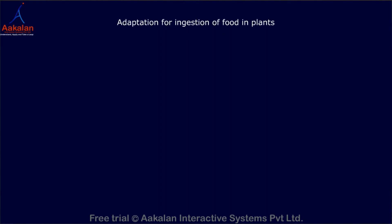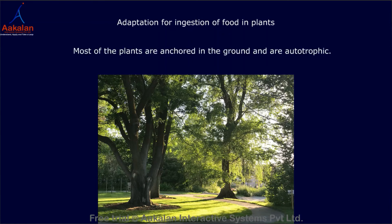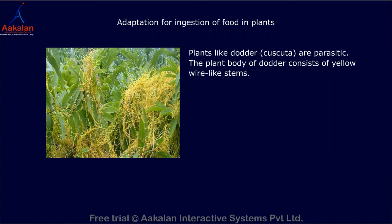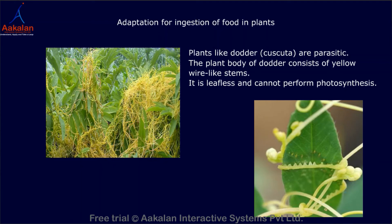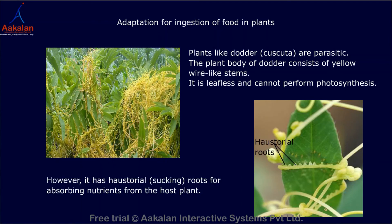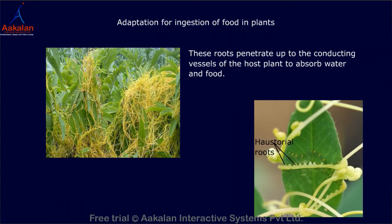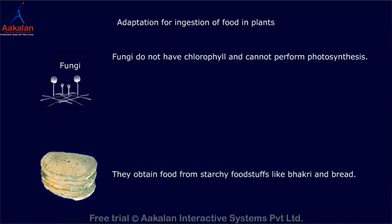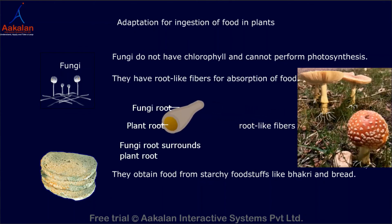The next category is adaptation for ingestion of food in plants. Most plants are anchored in the ground and are autotrophic. However, plants like Dodder (Cuscuta) are parasitic. The plant body of Dodder consists of yellow wire-like stems; it is leafless and cannot perform photosynthesis. It has haustorial sucking roots for absorbing nutrients from the host plant, which penetrate up to the conducting vessels to absorb water and food. Fungi do not have chlorophyll and cannot perform photosynthesis; they obtain food from starchy foodstuffs like bread, using root-like fibers for absorption.